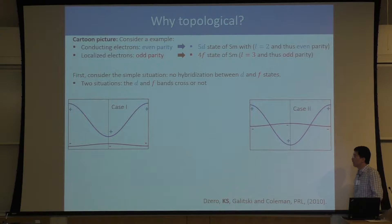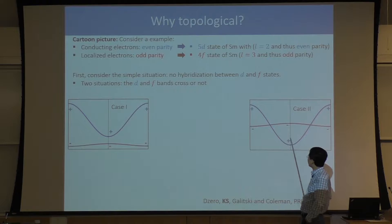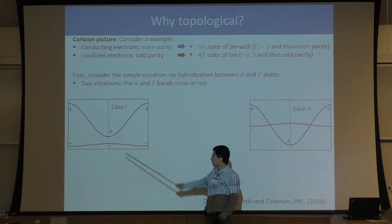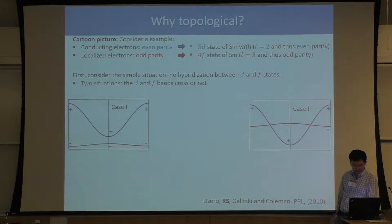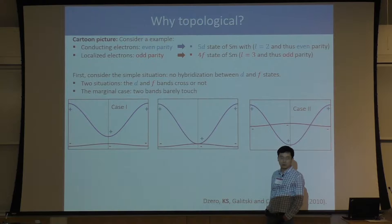Let's start from the simple situation where these two bands don't talk to each other. If this localized band and this conducting band don't talk to each other, then we only have two possibilities. Possibility 1: they don't cross with each other. Possibility 2: they do cross with each other. These two cases are separated by a marginal case where the two bands barely touch.